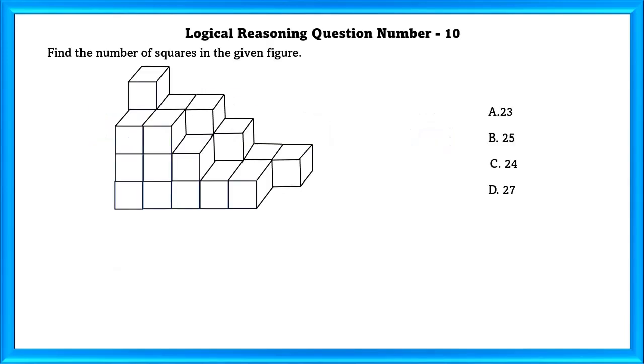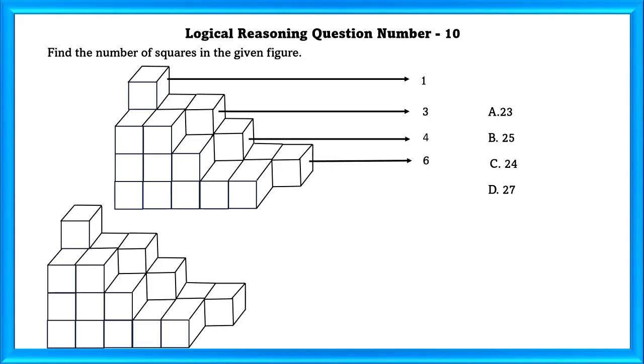Logical Reasoning Question Number 10: Find the number of squares in the given figure. In the first layer: 1, 3, 4, and 6. The second layer: 2, 3, and 5. If we add this all up, we will get the answer 24. So our answer is C, 24.